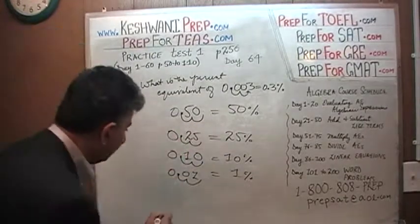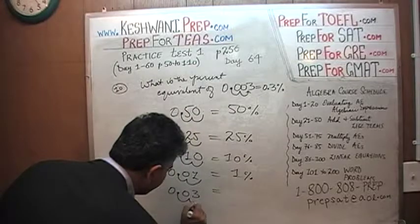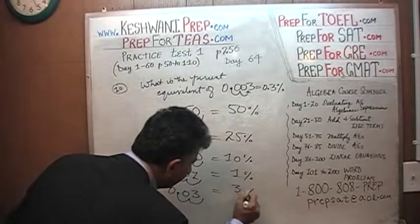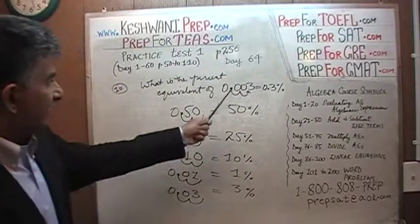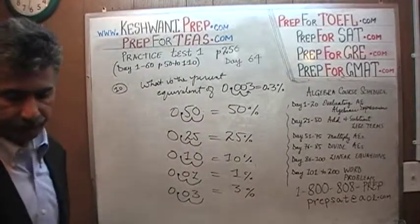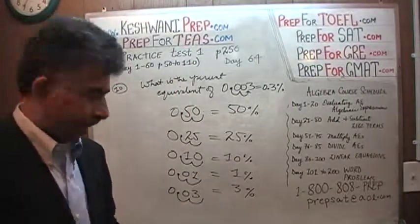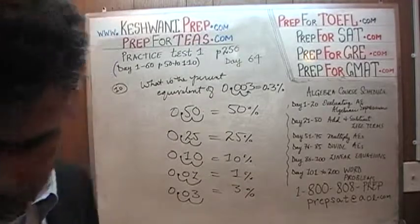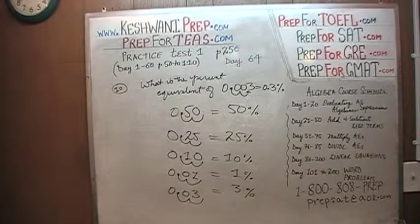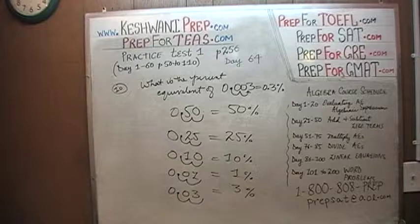Note that 0.03 would have been 3 percent, because moving the decimal two places gives 3%. But it's not 0.03 — it is 0.003, which is 0.3 percent. That's all. I'll see you tomorrow.